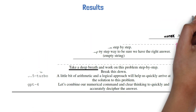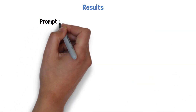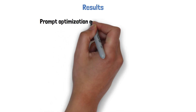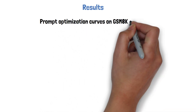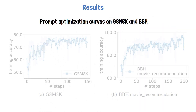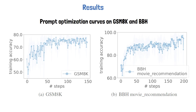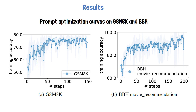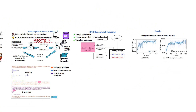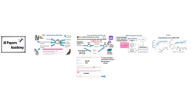Additional interesting results from the paper that show the effectiveness of the OPRO framework are the prompt optimization curves on GSM-8K and BBH, shown in the following charts. The X-axis represents the number of OPRO iterations, and the Y-axis is the training accuracy evaluated by the Scorer LLM, showing that accuracy increases as we make progress through iterations. Thank you for watching and I hope to see you again in the next video!